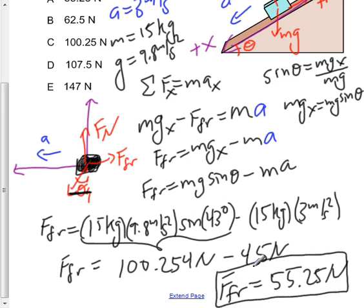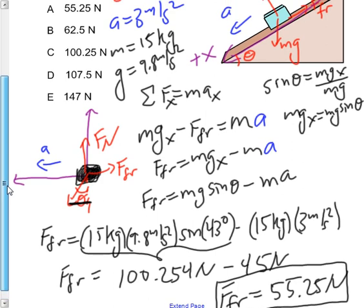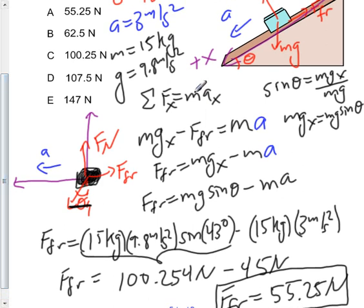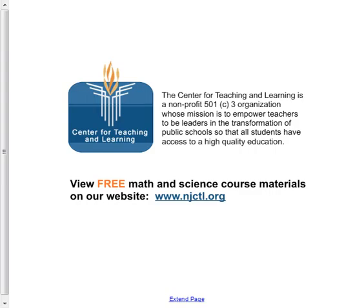So this is roughly what the force due to friction is. If we now look back at our choices, the only one that corresponds to our answer here is A, which is 55.25 newtons, which is the magnitude of the frictional force.